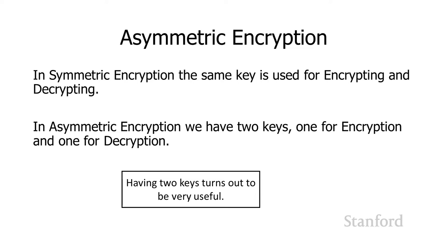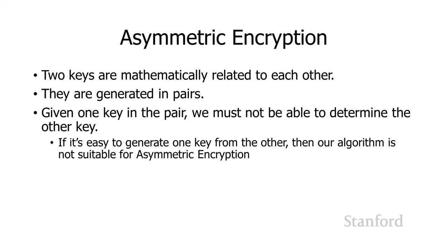There's another encryption technique called asymmetric encryption, where we have two keys — one key is used for encrypting and the other is used for decrypting. Having two different keys is super useful. The two keys have to be mathematically related to each other and are generated as pairs. If you have one key in the pair, you can't easily determine the other key, because if you could get from one key to the other, the keys would be useless for asymmetric encryption. If somebody gets hold of one key but not the other, they can't reverse engineer it to find the matching key.